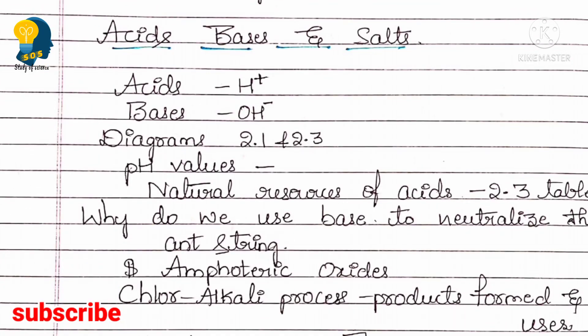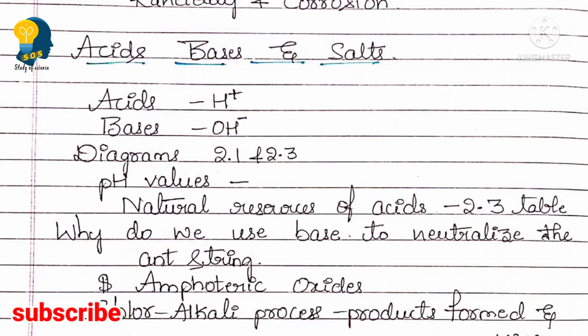Next is Acids, Bases and Salts. Learn the difference between acids and bases — acids have more H⁺ ions, bases have more OH⁻ ions. You must learn diagrams 2.1 and 2.3: the reaction of zinc granules with dilute sulfuric acid, and acid solution in water conducting electricity. Focus on pH values and the natural sources of acids given in Table 2.3 of your textbook. Also learn why we use a base to neutralize an ant sting — because ant stings contain methanoic acid (also called formic acid), and applying baking soda neutralizes it.